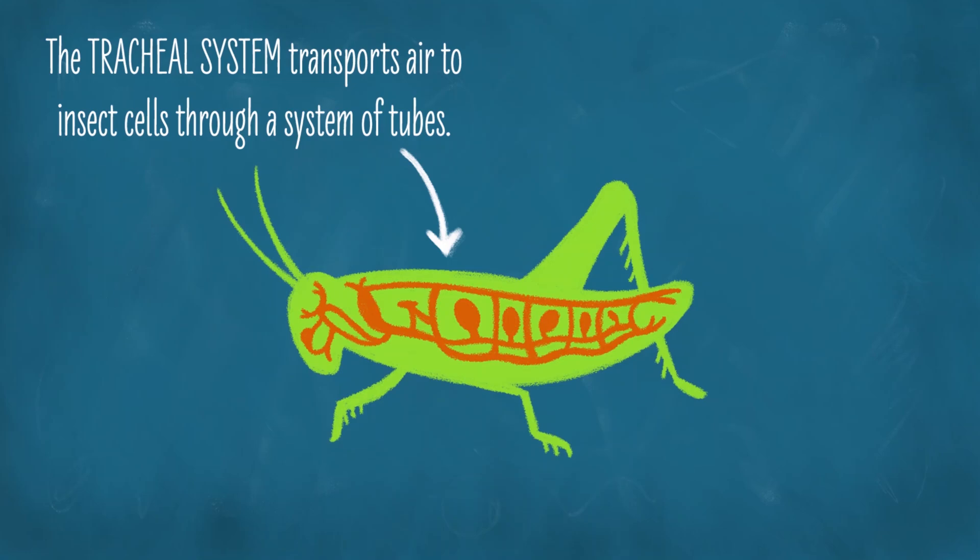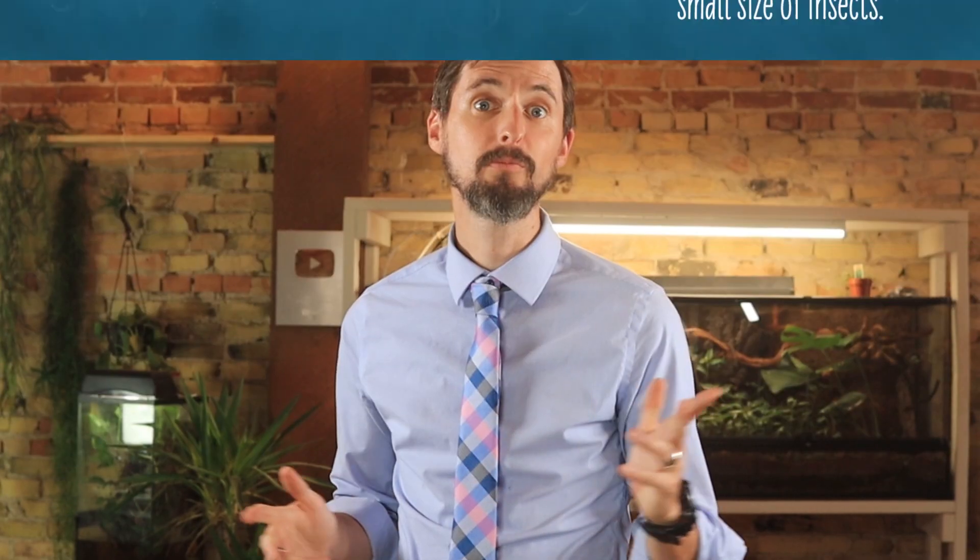Instead, air is transported directly to their cells through a system of tubes called a tracheal system, and this works pretty well as long as the tubes don't need to go too far. You may have noticed that insects — even the largest in history — were not that large, and that they were bigger at times in Earth's history when oxygen concentrations were higher and the tracheal system didn't need to be quite so efficient. Now you know why.